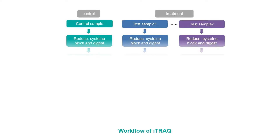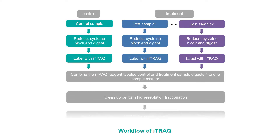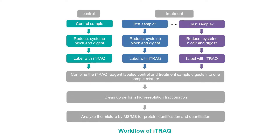In the general workflow for an iTRAQ experiment, each sample is reduced, cysteine blocked, and digested with trypsin. Each sample is labeled with a different iTRAQ tag in a single tube. Then we can combine all iTRAQ reagent labeled samples into one sample mixture for liquid chromatography tandem mass spectrometry analysis.